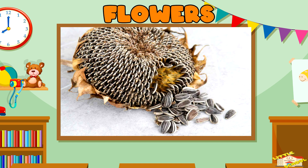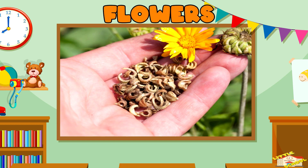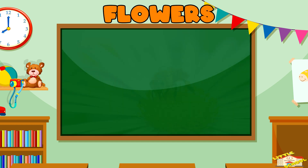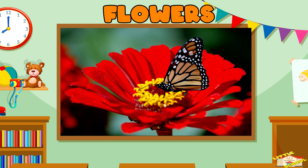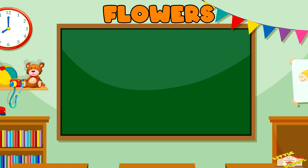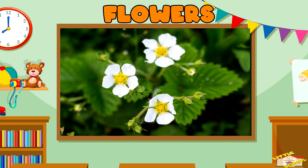Flowers are the plant's way of making seeds so new plants can grow. Flowers also attract bees and other animals to help the plant spread its pollen. Some flowers turn into fruits.